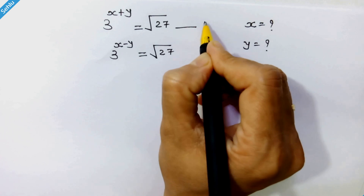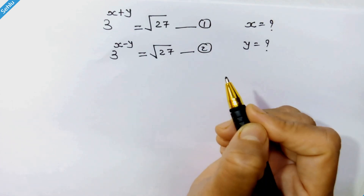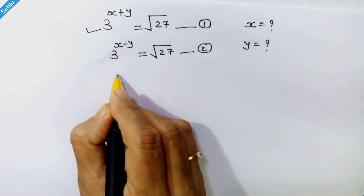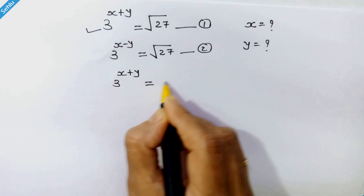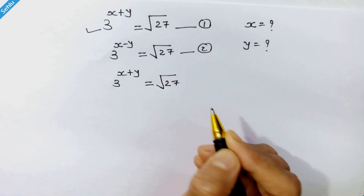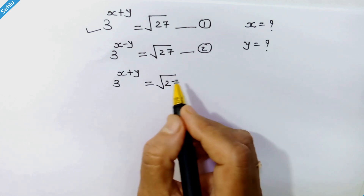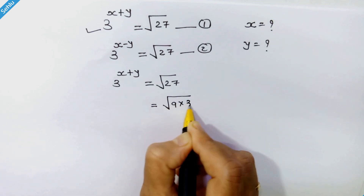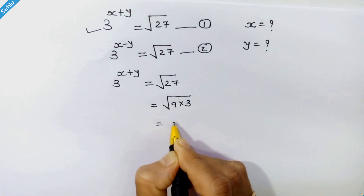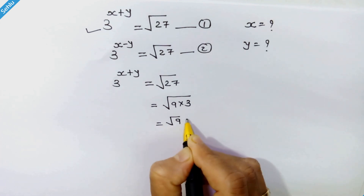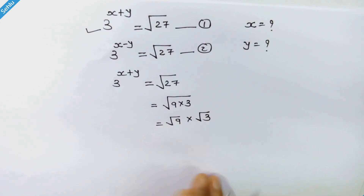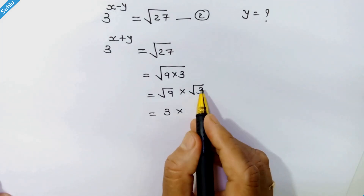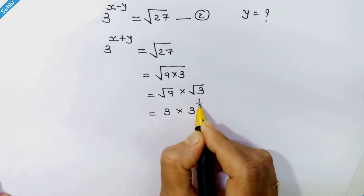We will call this equation number 1 and this equation number 2. Taking equation number 1, which is 3 raised to x plus y is equal to square root of 27. We will focus on the right hand side — it can be written as square root of 9 times 3, or square root of 9 into square root of 3. Square root of 9 is 3, and square root of 3 can be written as 3 raised to 1 upon 2.